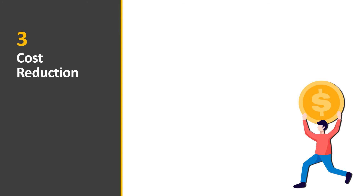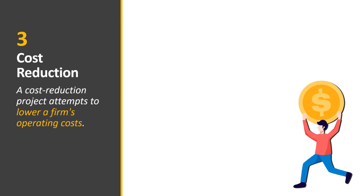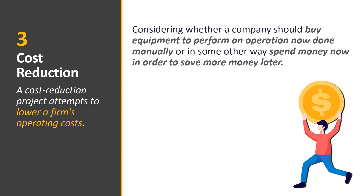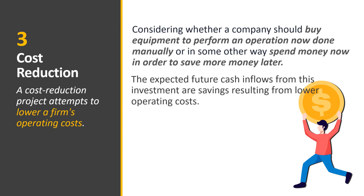The third type is cost reduction. A cost reduction project attempts to lower a firm's operating costs — for example, whether a company should buy equipment to perform an operation now done manually. In manufacturing, some parts are made manually. The company may buy new automated equipment for those parts, spending money now in order to save more money later. The expected future cash inflows from this investment are savings resulting from lower operating costs — not additional revenue, but savings in production costs.